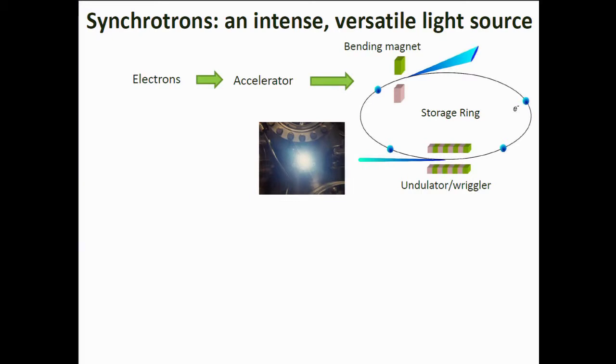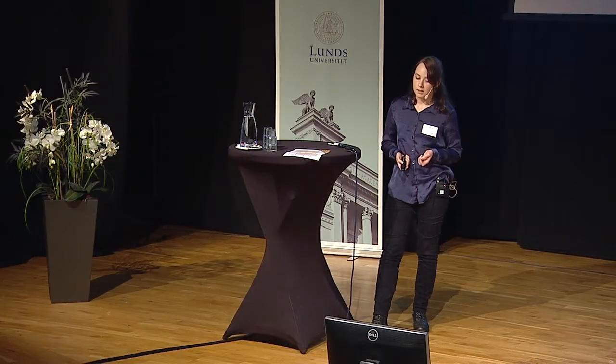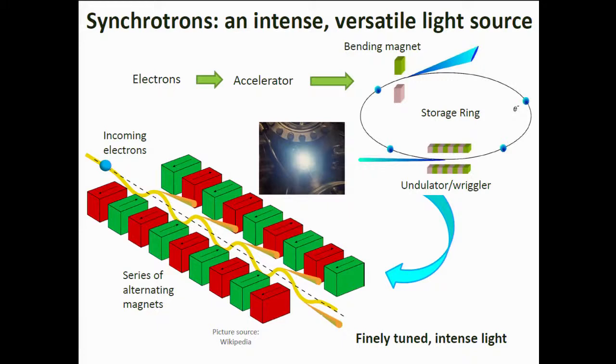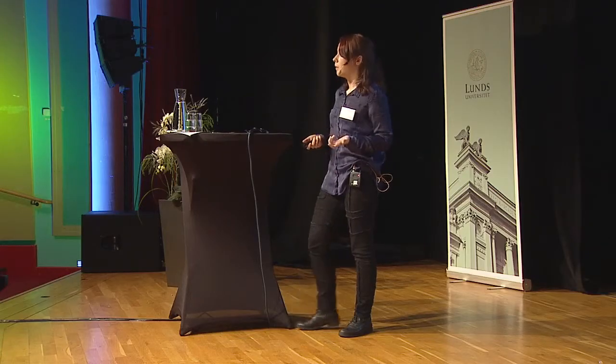Usually you would also use components such as undulators and wigglers. What these essentially are is a series of alternating magnets. Depending on the precise placement of these magnets, you can really well control small changes in the electron trajectory. This means you have much better control on the sort of light which is emitted. In this way, we can control the polarization of the light, the energy, and in effect the wavelength of the light. So you can tune this depending on what kind of sample you're looking at and what kind of information you want to obtain.